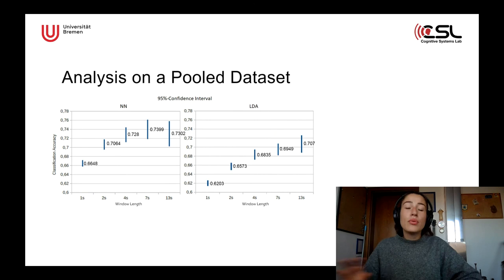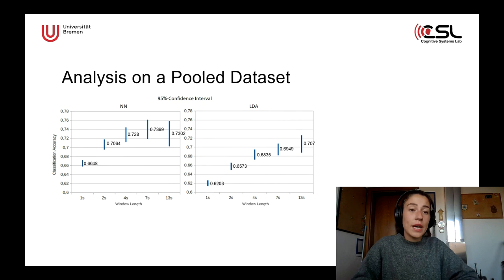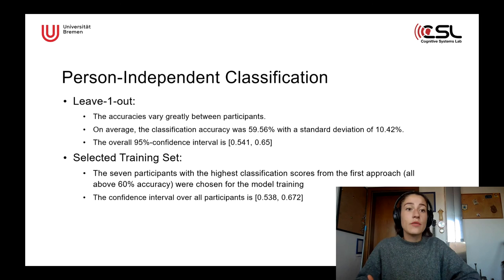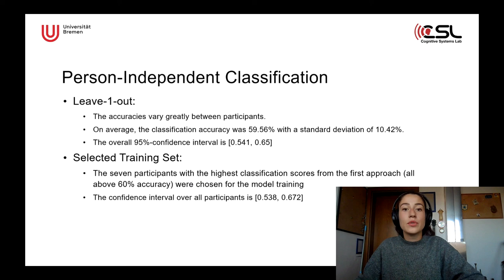In the next step, we pooled the dataset of all participants and tried to figure out what happens when we don't train person-dependently. We found that the convolutional neural network outperformed the LDA for this pooled dataset. The four-second and seven-second windows for the neural network reached the highest accuracies, as shown by the 95% confidence interval for a tenfold cross-validation. For a true person-independent classification in a leave-one-out approach, accuracies varied greatly between participants — on average a little below 60%, with a 95% confidence interval of 54% to 65%. We also trained on a selected training set of seven participants with the highest classification scores, which increased the accuracies slightly.